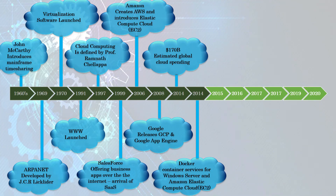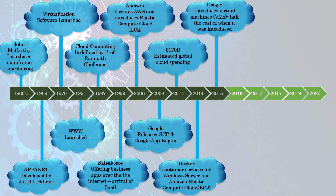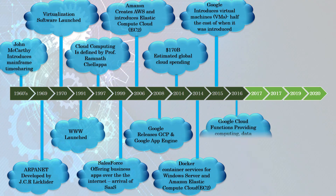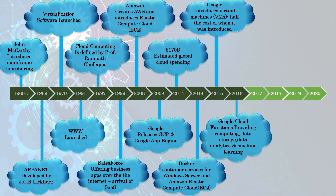In 2015, Google introduced virtual machines at half the original cost. By decreasing the price, the use of cloud computing services deeply increased. And in 2016, Google Cloud Functions provided new services such as computing, data storage, data analytics, and machine learning.